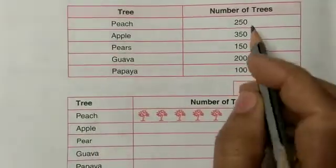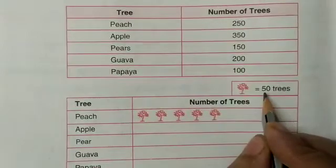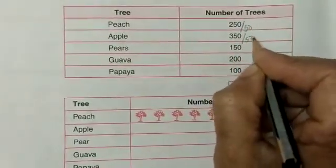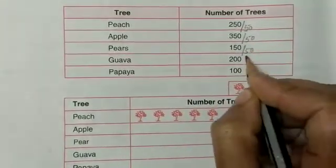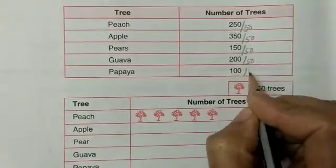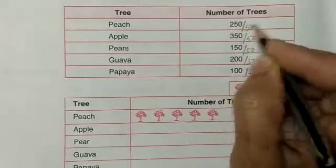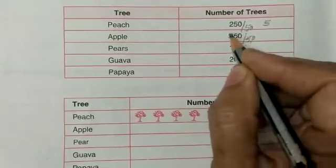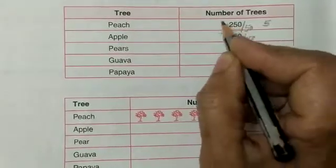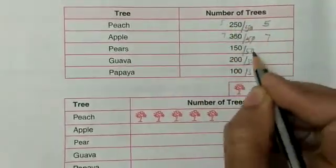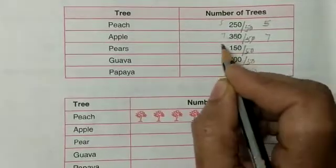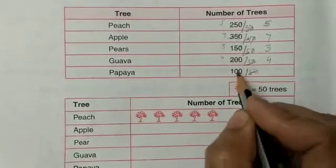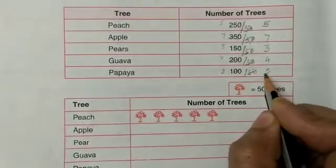Peach is 250 and one tree is equal to 50, so you can divide it by 50. Every part you have to divide by 50. So you will get: peach — 5, apple — 7, pears — 3.